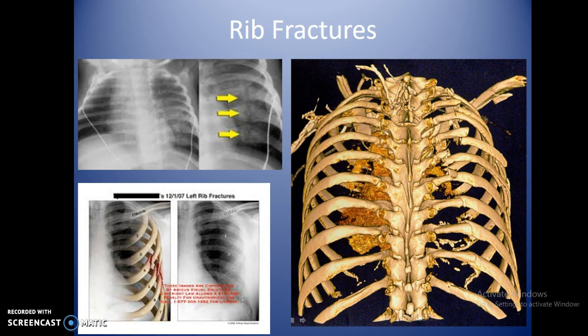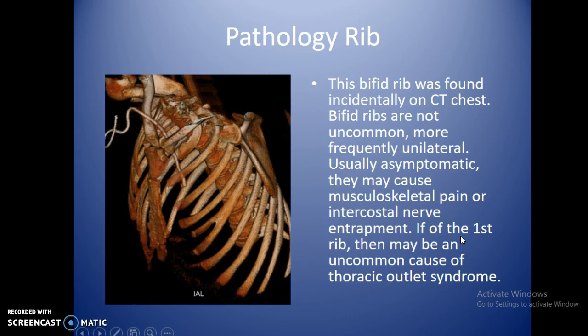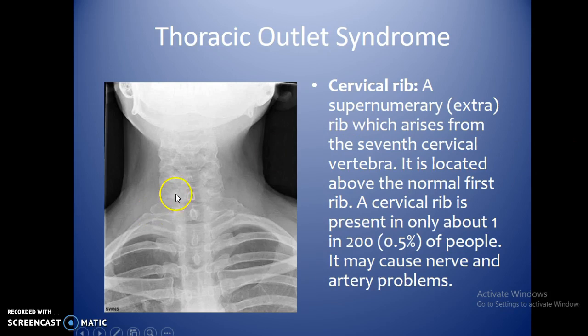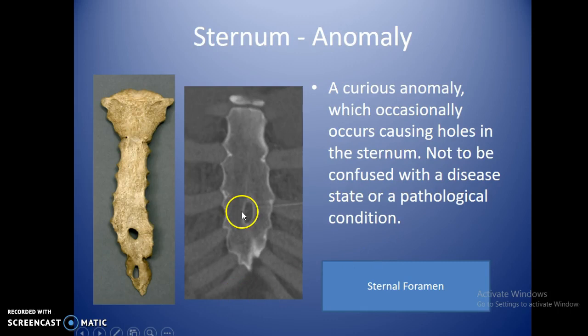Additional rib fractures are shown for review. A bifid rib is a congenital variant where the rib splits into two forks — if nerves run across it, the patient may have problems. Thoracic outlet syndrome involves an extra rib coming off the cervical area that doesn't curve around — it occurs in about half of the population. The sternal foramen is another variant that may be seen.